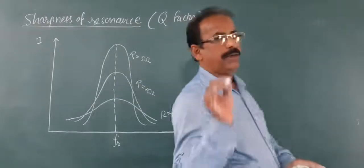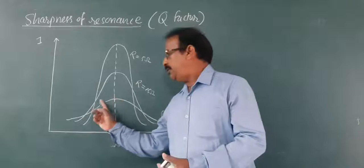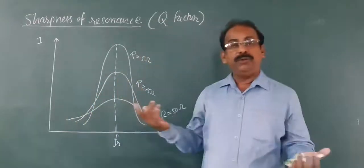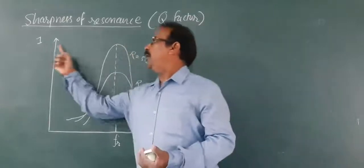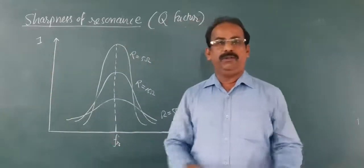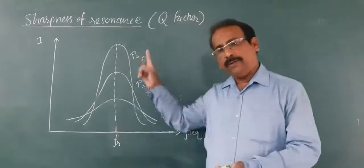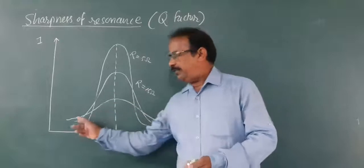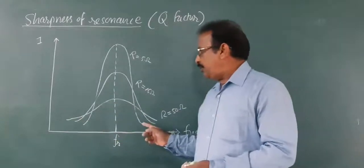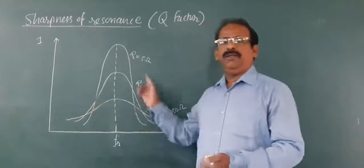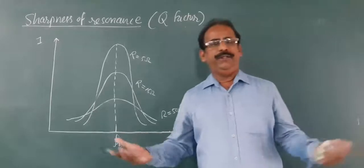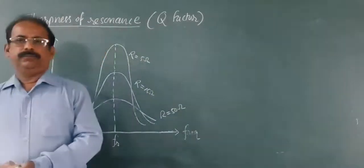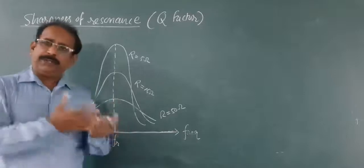This resonance curve is for R = 50 ohm, showing the maximum value of current for that resistance. This is also a resonance curve for a lower resistance, and this one is also a resonance curve. Only different values of resistance have been taken here. In all three cases we are getting resonance.